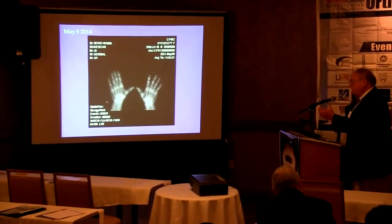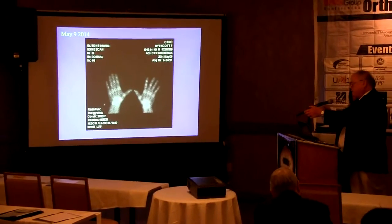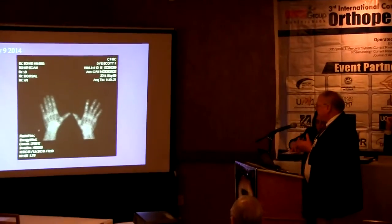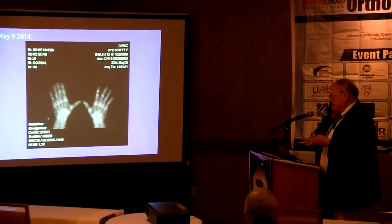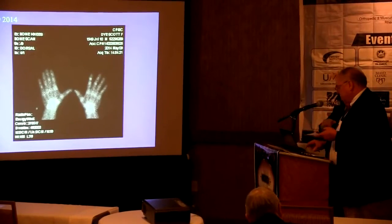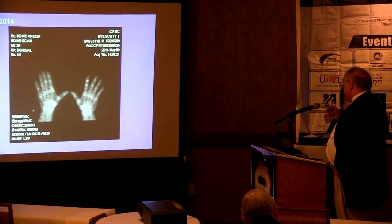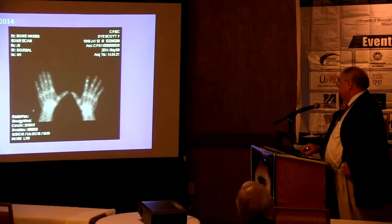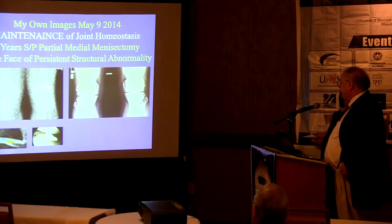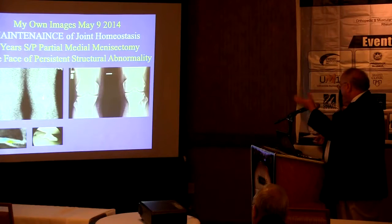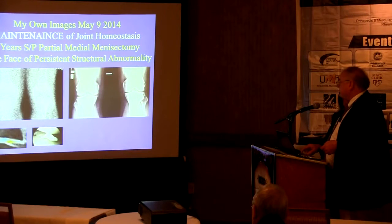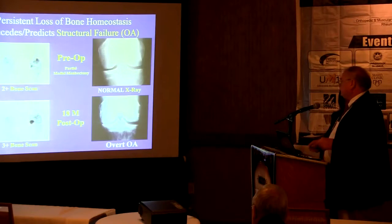In May of this year I developed pain in my carpal-metacarpal joint, and I predicted a hot bone scan there — and indeed it confirmed that same process. This same process occurs in any joint, and we've proven this in other joints as well. This was my seventh bone scan in my life, and it gave me a chance to re-scan my knees. It is proven that I've maintained joint homeostasis in my left knee despite these structural characteristics, in the face of persistent structural abnormality.